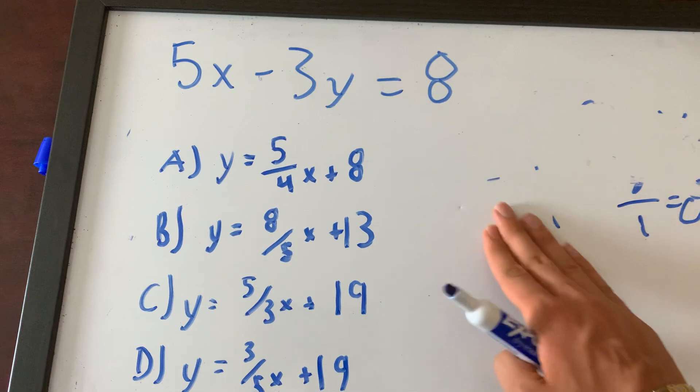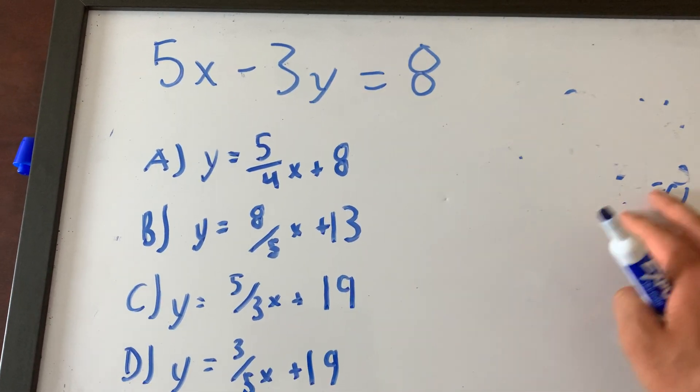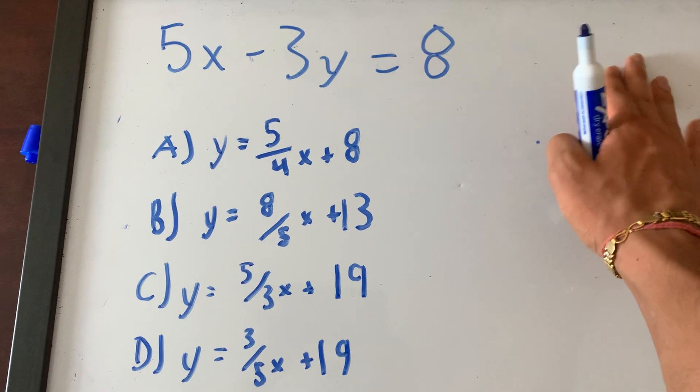But that's the negative b over a trick, right? That's the trick that can literally make a 1 minute problem into 5 seconds.